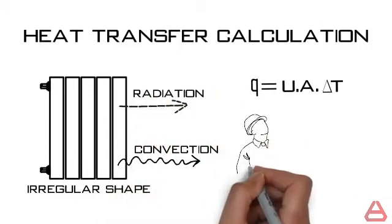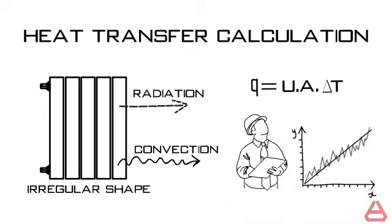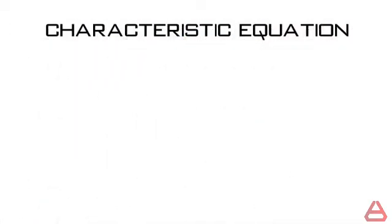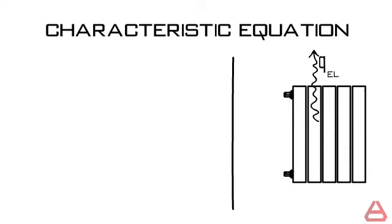engineers, using experimental procedures and regression analysis, produce a characteristic equation for aluminum radiators which predicts the heat produced per element. Let us imagine an aluminum radiator and consider only a single element out of this radiator. The formula is in the following form.